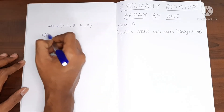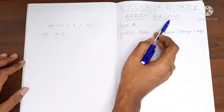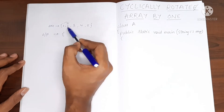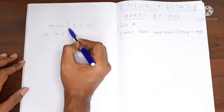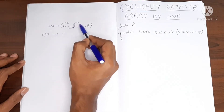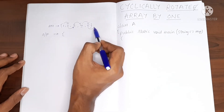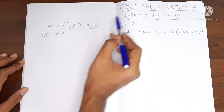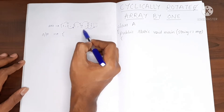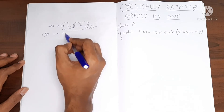Our output should be... We are going to rotate it by a distance of 1. So we are going to move this 1, move this 2 over here, move this 3 over here, move this 4 over here. And then where will 5 go? 5 has nowhere to go. And since it is cyclically rotating, this 5 will move to the beginning of the array.